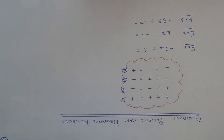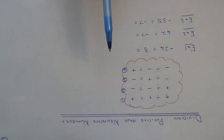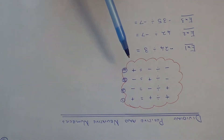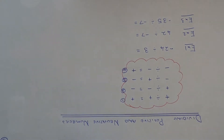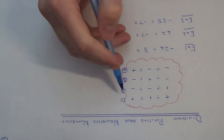Today I'm going to show you the four rules for dividing positive and negative numbers. These four rules are exactly the same as the four rules for multiplying positive and negative numbers.